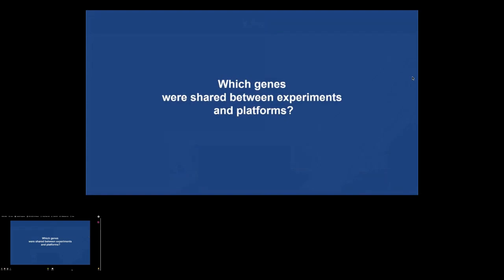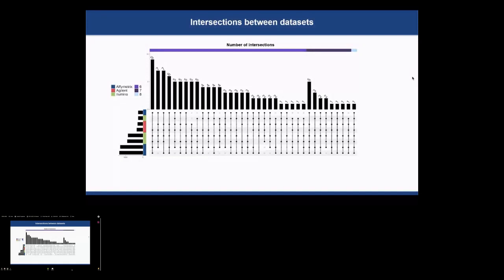Subsequently, we asked which genes were shared between experiments and platforms. This plot shows the number of intersections within the results of the differential expression analysis between the eight experiments.